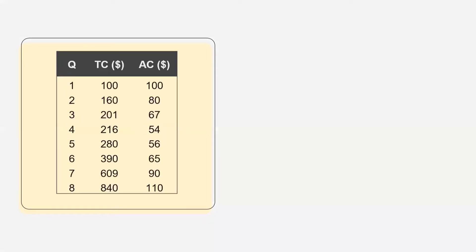This is the schedule of average cost. Here we have quantity, total cost, and average cost. You can see that initially average cost is declining and then it starts increasing.